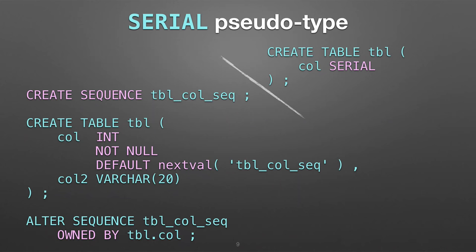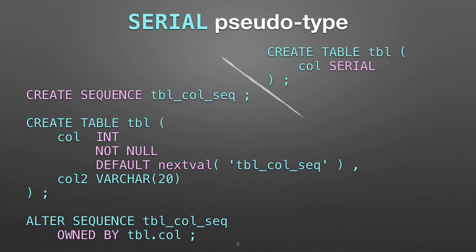This is what you're getting when you use the serial command — this is effectively what it creates. It creates a sequence, gives it a name — and it generates this name which is not always obvious. That's one of the major problems: figuring out the name of the sequence that was generated for you in the background, because all you see in your code is the word serial. It's also expanding that serial out in your table to say this is an integer — not null — and it's using default to call the function nextval pointing to the name of the sequence. Serial is just shorthand for doing this, but notice there's no primary key in here, and no unique constraint either.